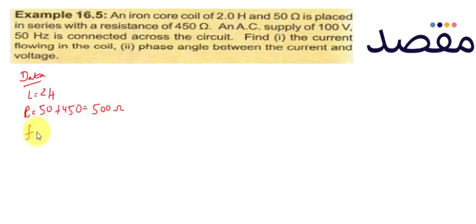Frequency of the circuit is 50 hertz, and the voltage source is 100 volts. We need to know two things: the current in the circuit.